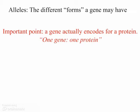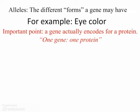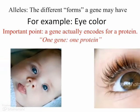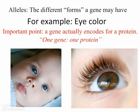The classic trait, of course, is eye color — whether things are brown eyes or blue eyes. It's important to keep in mind that a gene actually encodes for a protein. We have what's called the one gene, one polypeptide hypothesis — we're simplifying it here to one protein, and I'm sure you'll get into that in later years.